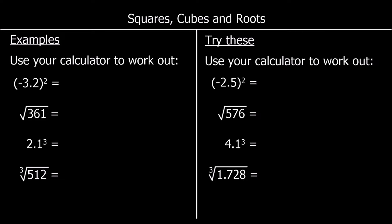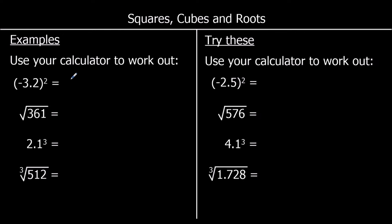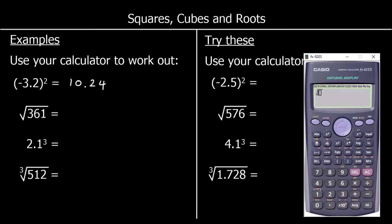Now we're using a calculator for squares, cubes and roots. For negative 3.2 squared, whenever we have a negative number squared we must use brackets, otherwise we'll get the wrong answer. Put the number inside brackets, press the squared button, then press equals — I'll press the S to D button to get a decimal, giving 10.24. For the square root of 361, press the square root button, enter 361, press equals, and that's 19.